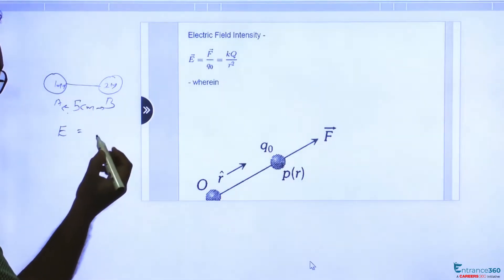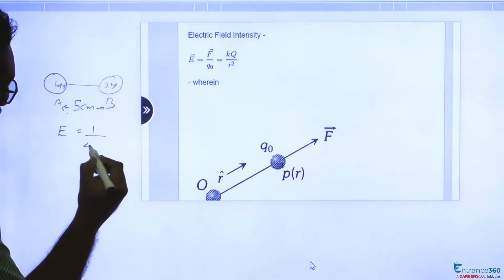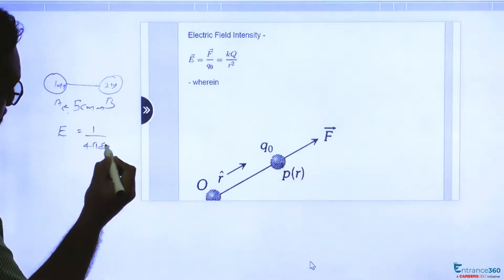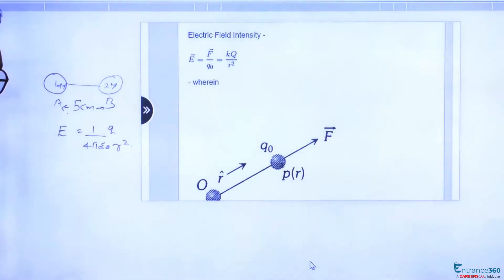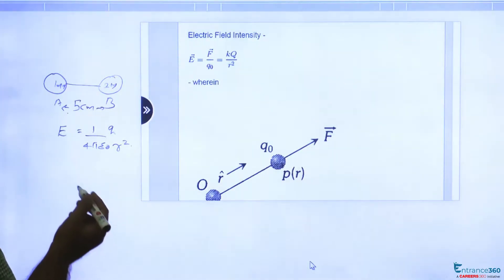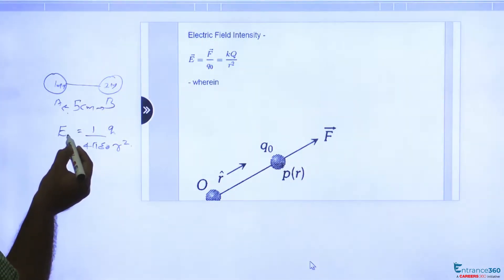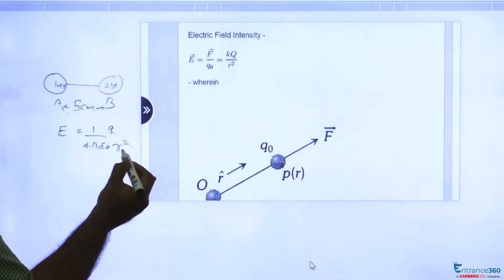is given by k q by r square where k is 1 by 4 pi epsilon 0 q by r square. So these are uniformly charged spheres, so let's say radius of first sphere is r1.